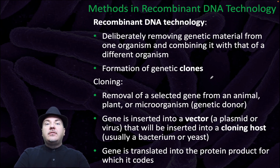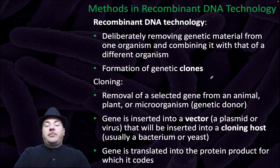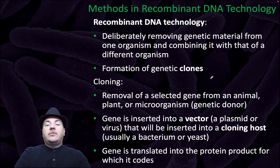Recombinant DNA technology is deliberately removing genetic material from one organism and combining it with that of a different organism. This involves the formation of genetic clones. Cloning involves removal of a selected gene from an animal, plant, or microorganism — that's the genetic donor. The gene is inserted into a vector, which can be a plasmid or a virus, that will then be inserted into a cloning host, usually a bacteria or yeast cell. The gene is then translated into the protein product for which that gene codes.